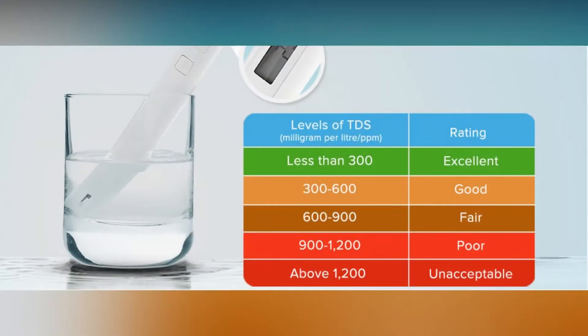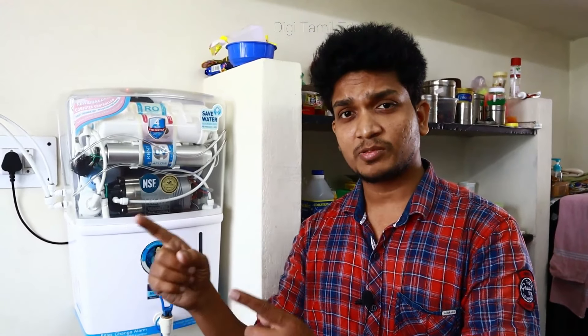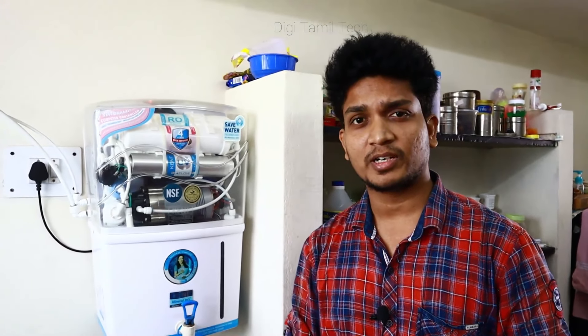Let's look at a TDS level chart. TDS level 300 and below is acceptable. 300 to 600 is excellent. 300 to 600 is good. 600 to 900 is fair. 900 to 1200 is poor. 1200 and above is unacceptable. The PPM level is high, so let's check. We have a filter and tap water, and we have a TDS meter. Let's check the TDS and PPM levels.